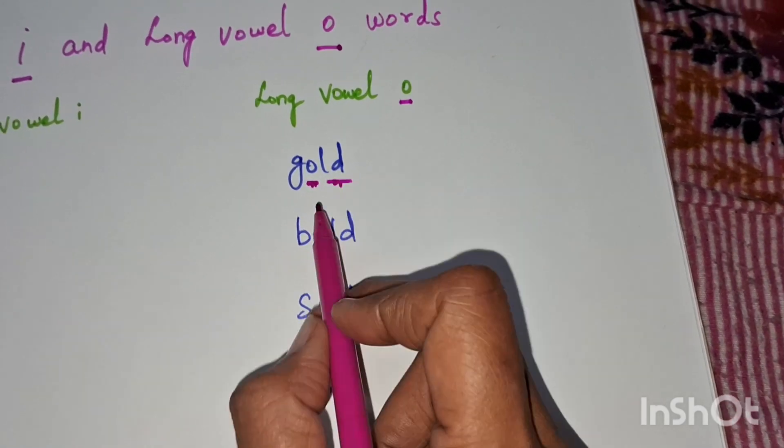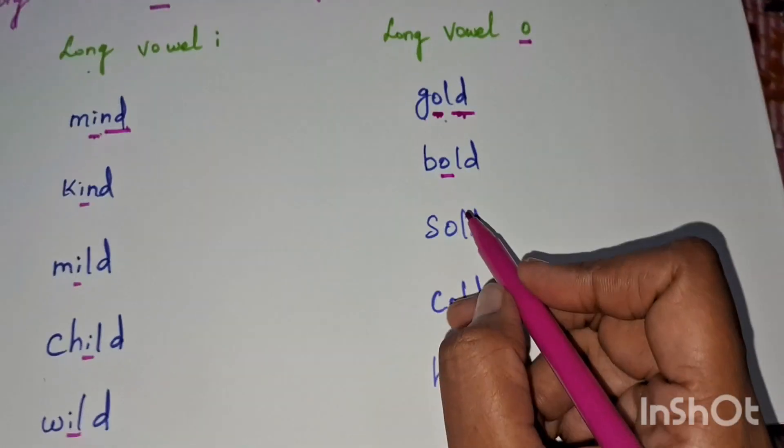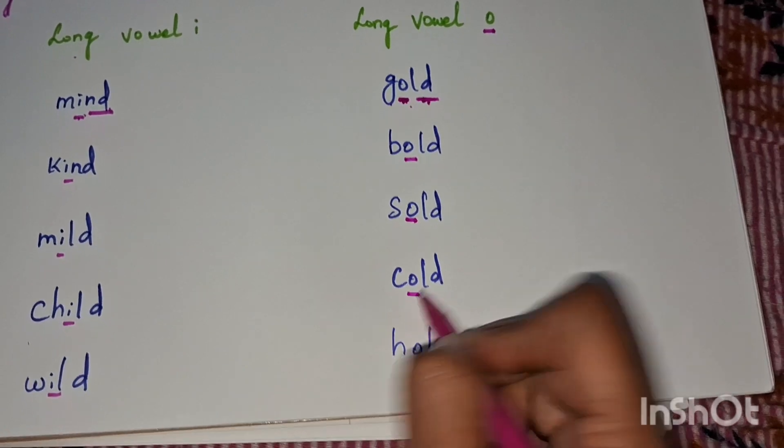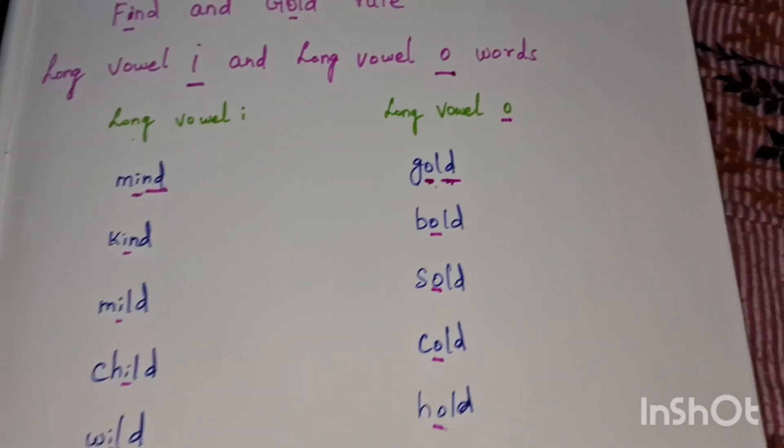K-old, gold. B-old, bold. S-old, sold. C-old, cold. H-old, hold. Okay, thank you.